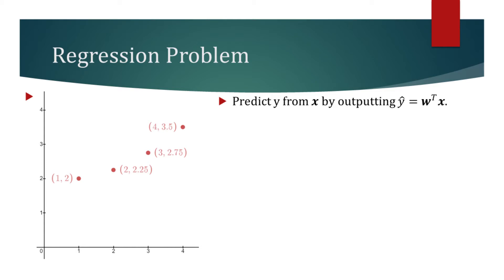We need a performance measure to evaluate how well we are handling this task. We will use the mean squared error. Basically, we subtract the vector of the actual values y from the vector of our predictions y hat, find the squared Euclidean norm and divide the result by the number of samples m.